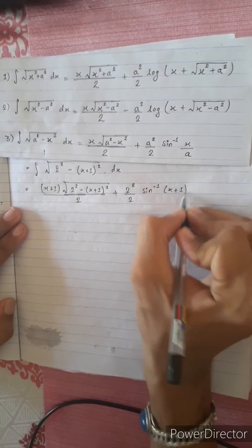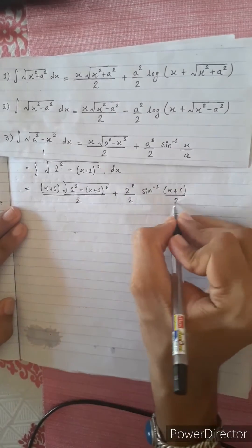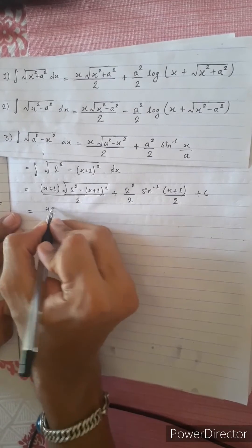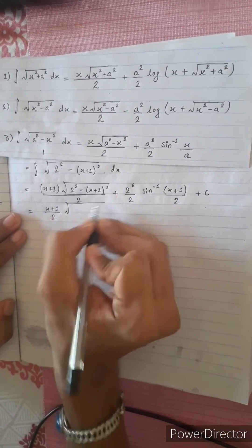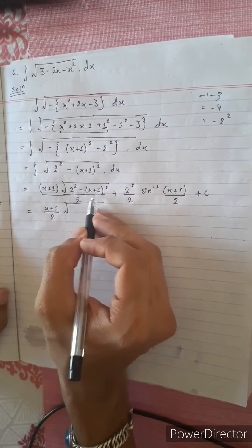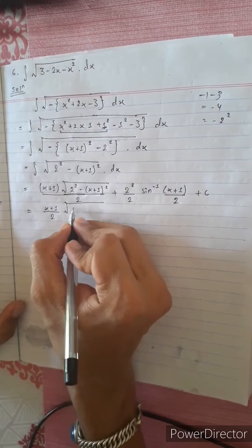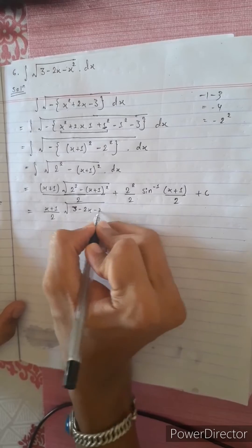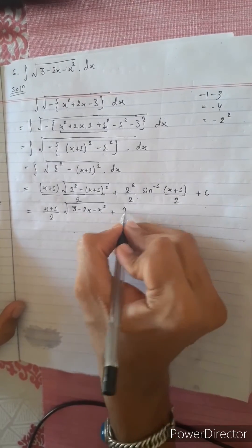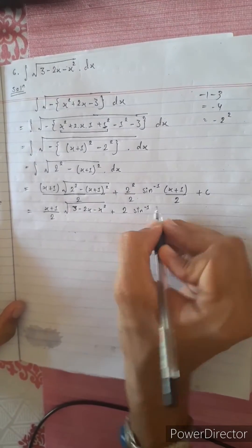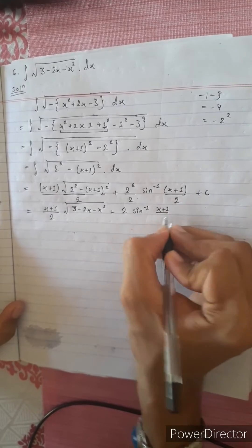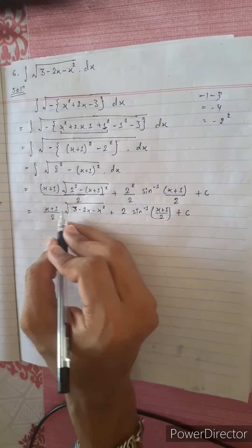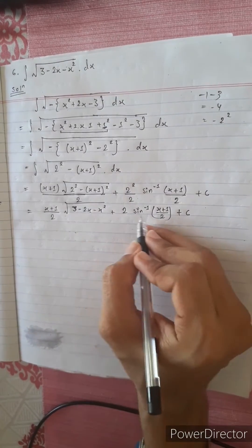√(a²-x²) · a²/2 plus a squared by 2 sin inverse x by 2, with x plus 1, a by 2 plus C. Final answer: 3 minus 2x minus x squared plus 4 by 2, a by 2 sin inverse x plus 1 by 2 plus C. Simplified: √(3 minus 2x minus x squared) plus sin inverse x plus 1 by 2.